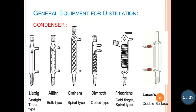These are the different types of condensers, just for your information: straight tube, bulb type, spiral type, coil type, cold finger, spiral type, and the double surface condenser. The inner tube and outer jacket allow cold tap water to circulate. This condenser is attached between the distillation flask and the receiver for the condensation of vapors.